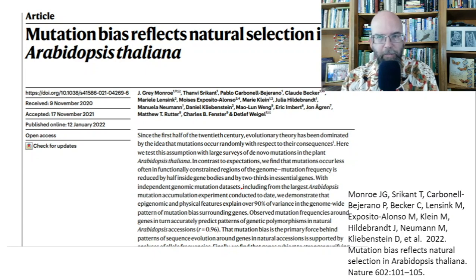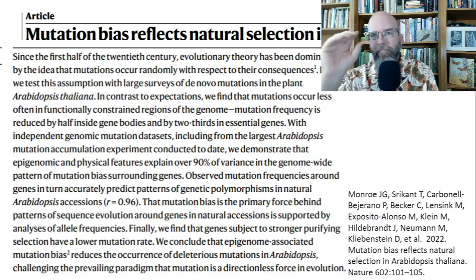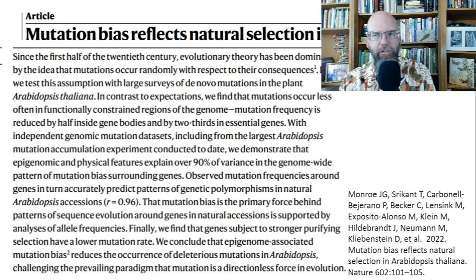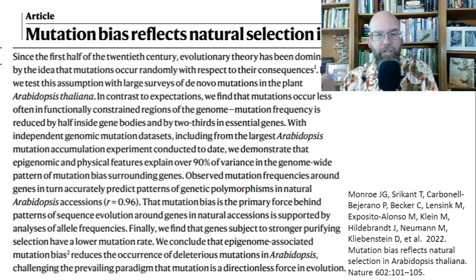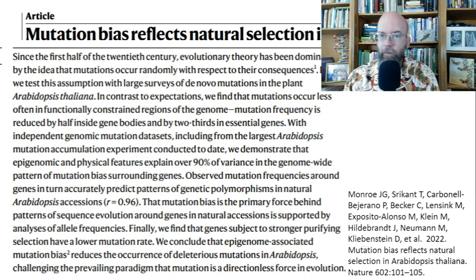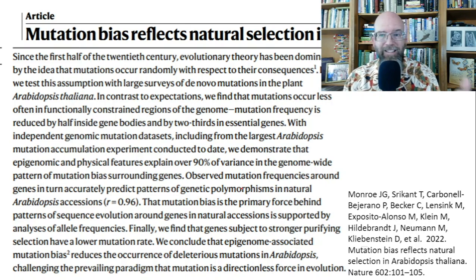The first paper we're going to look at was published January 12th, 2022, in the journal Nature — one of the most respected journals in the world, which publishes novel, important findings. Let's read the abstract. 'Since the first half of the 20th century, evolutionary theory has been dominated by the idea that mutations occur randomly' — and importantly, this is always with respect to their consequences. In other words, mutations happen not knowing what their consequences are going to be. A mutation could occur at a really critical location, change the shape of a protein, knock out the function of a gene, and if that gene is necessary for your survival, the organism will die.